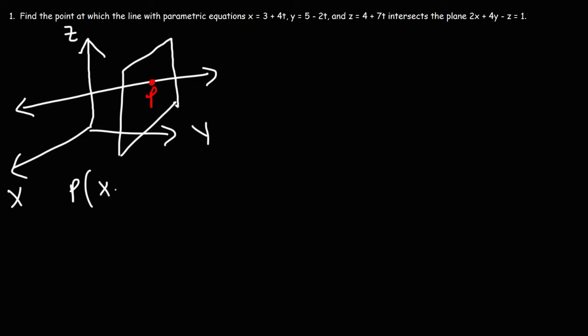Point P has an x, a y, and a z-coordinate. What we need to do is find some value t where the x, y, and z-coordinates in the parametric equations are the same as the x, y, and z-coordinates in the plane. Because at that point, that's going to be the point of intersection between a line and a plane, where the x, y, and z-coordinates are the same. But how do we go about finding it?